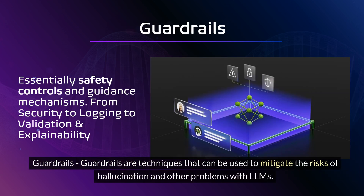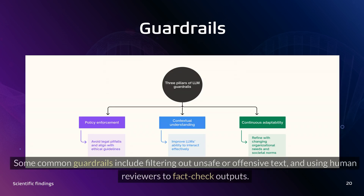Guardrails are techniques that can be used to mitigate the risks of hallucination and other problems with LLMs. Some common guardrails include filtering out unsafe or offensive text and using human reviewers to fact check outputs.